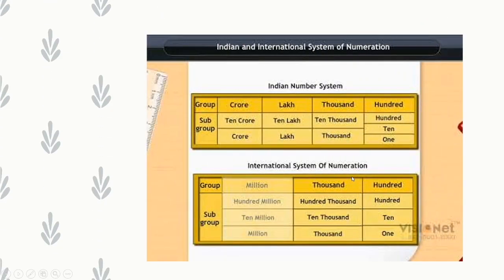Indian and international system of numeration. We are going to learn about two systems of numeration. One is the Indian system and another is the international system. The Indian number system is used in India, whereas the international system is valid throughout the world.